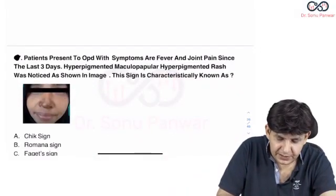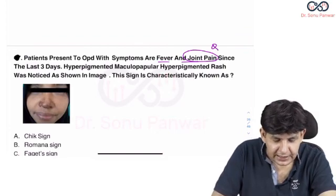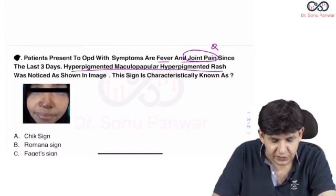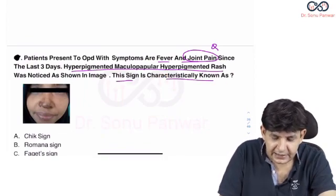The patient presents OPD with symptoms of fever and joint pain. Since the last 3 days, hyperpigmented maculopapular rash was noticed around this particular area. This sign is characteristically known as what?